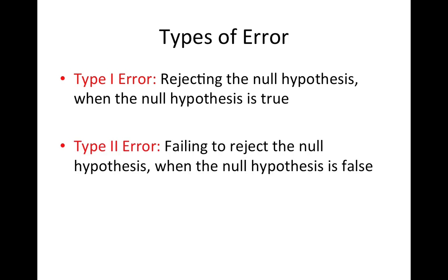A type 2 error, by definition, is when the null hypothesis is false. There actually is something going on in the population, but you fail to pick it up. You fail to notice that. You don't have enough evidence to reject the null hypothesis when you should have.